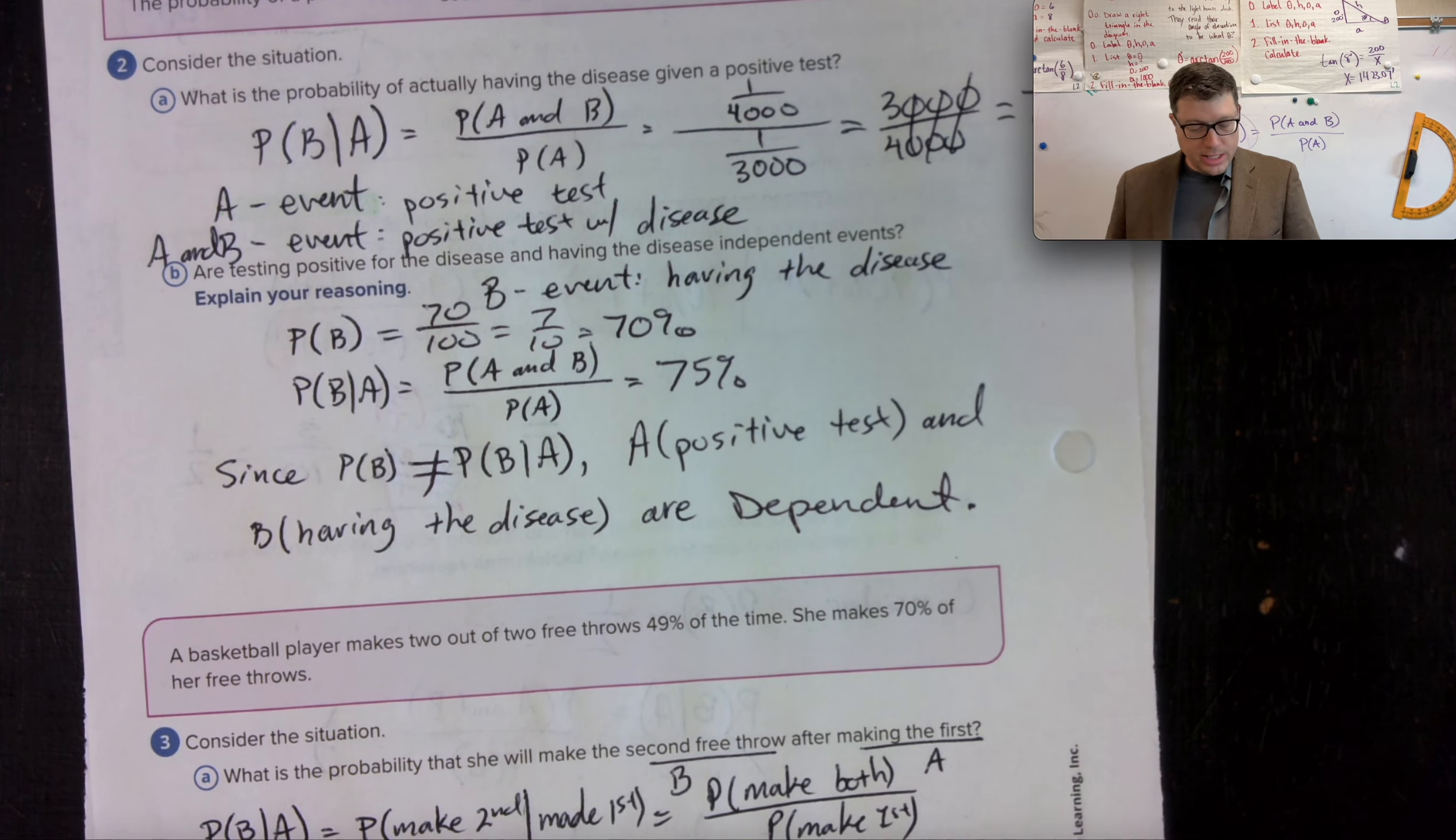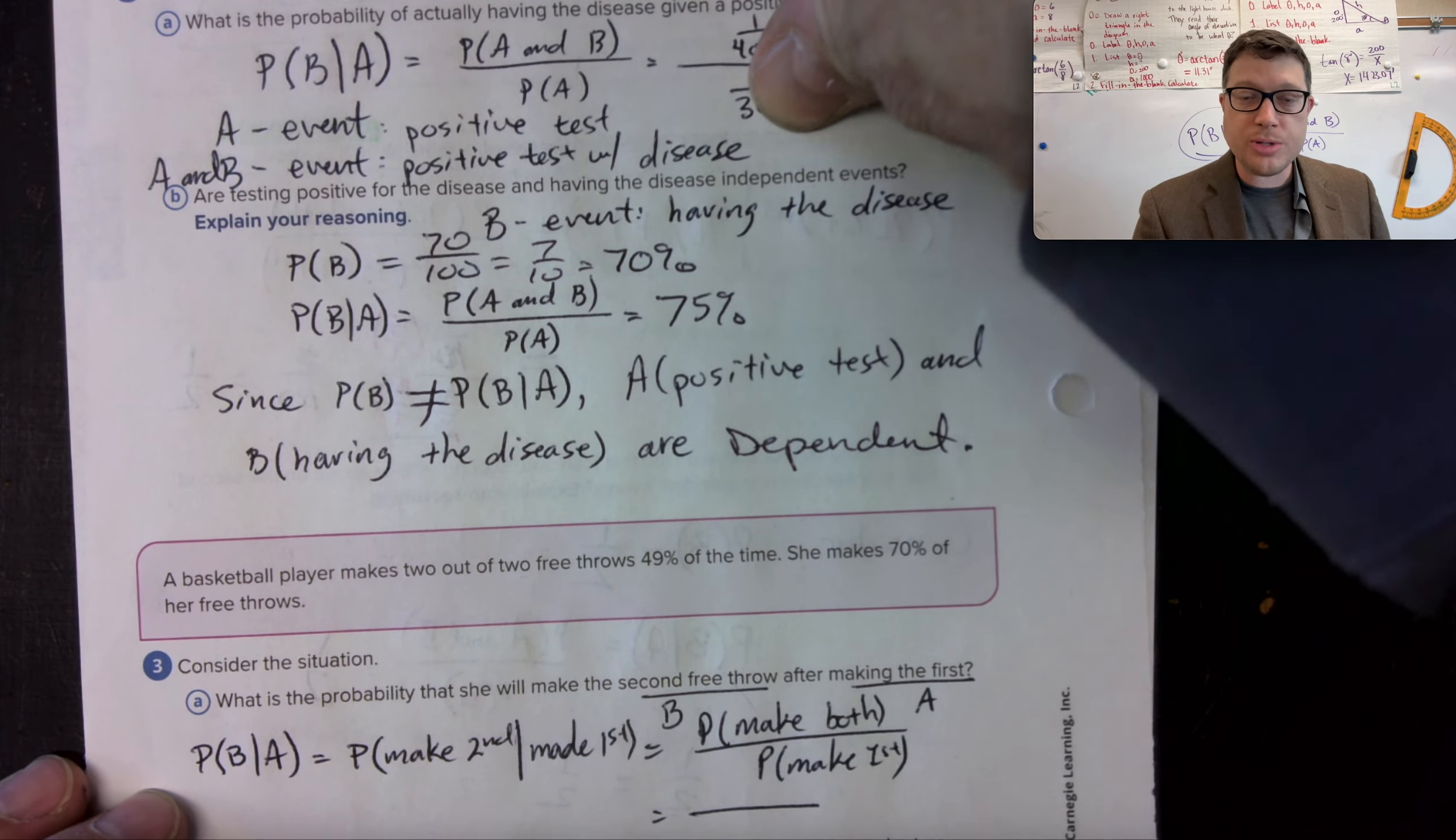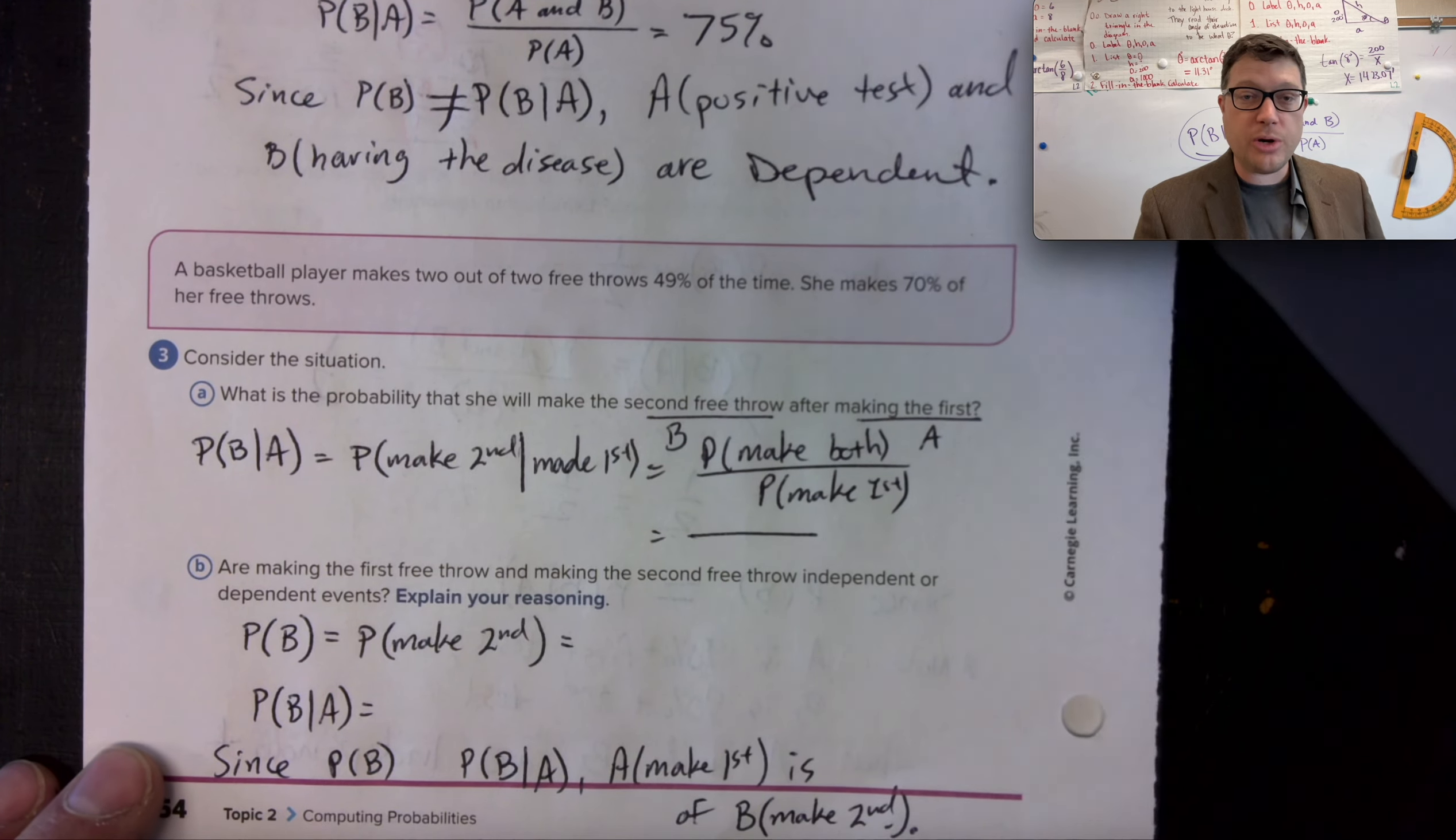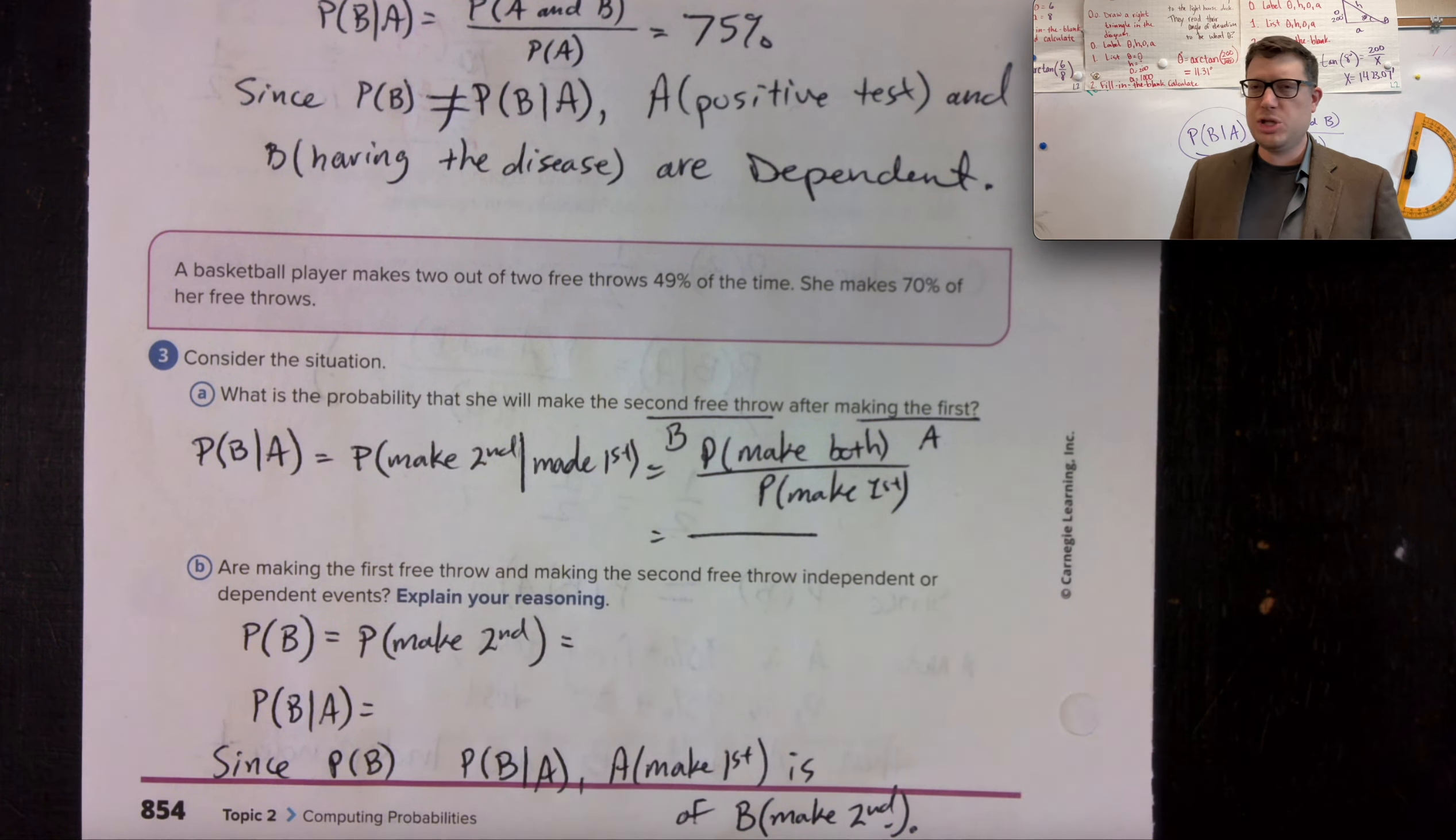What is the probability that they will make a second free throw? A basketball player makes two out of two free throws 49% of the time and she makes 70% of her free throws. What is the probability that she will make a second free throw after the first?